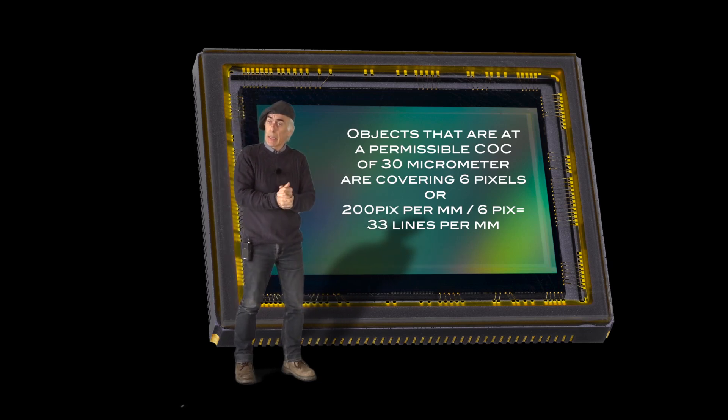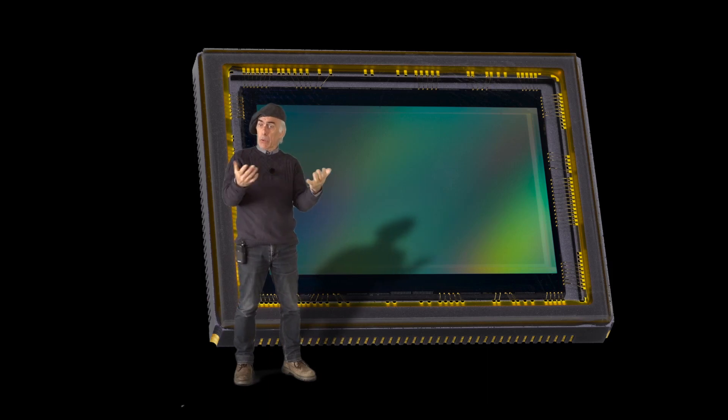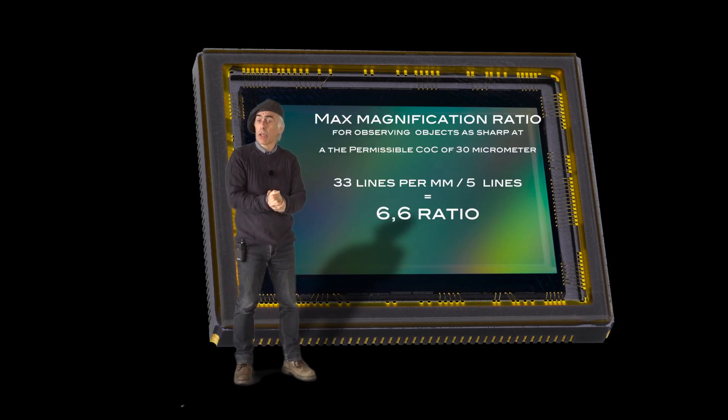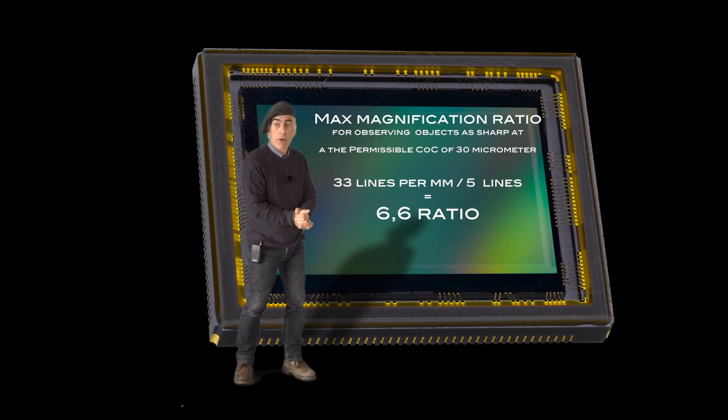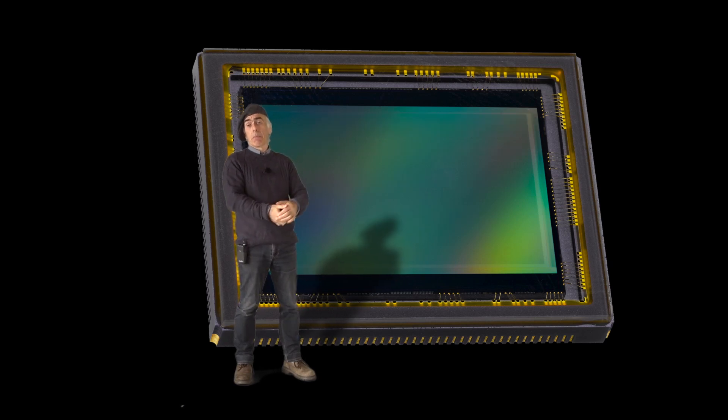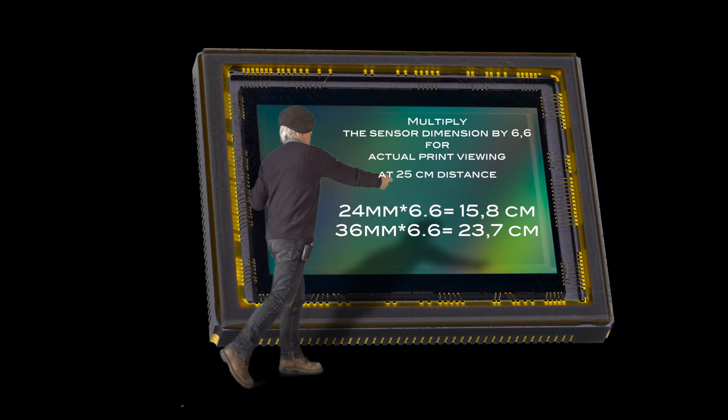So we now could conclude that 33 lines per millimeter divided by 5, and the 5 is our ability to see the amount of lines per millimeter at the distance of 25 centimeter, gives us a ratio of 6. So basically we can multiply the sensor dimensions by 6.